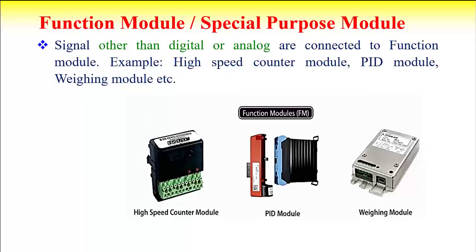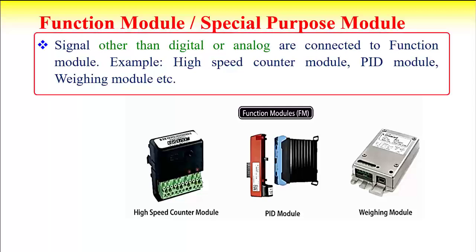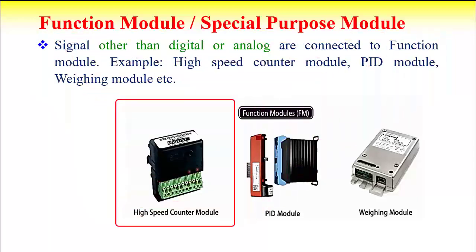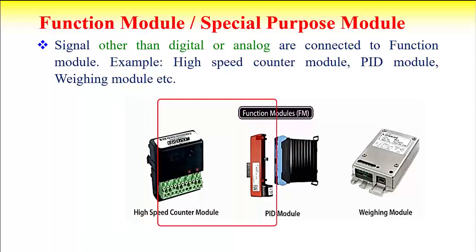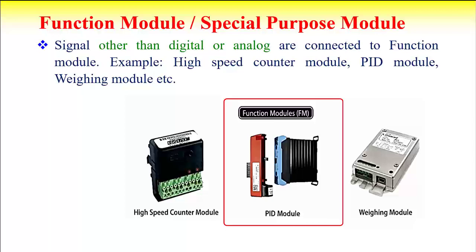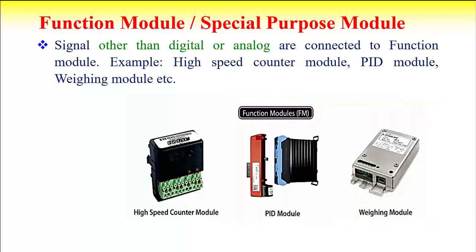Function modules, also called special purpose modules, are used when signals other than standard digital or analog are connected. Examples include the high-speed counter module — used to count high-frequency signals — the PID module used for process control systems, weighing modules, etc. These special purpose modules are used for functions that cannot normally be achieved using standard digital or analog PLC modules.